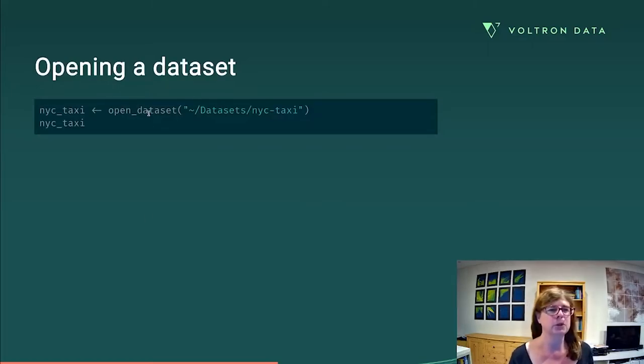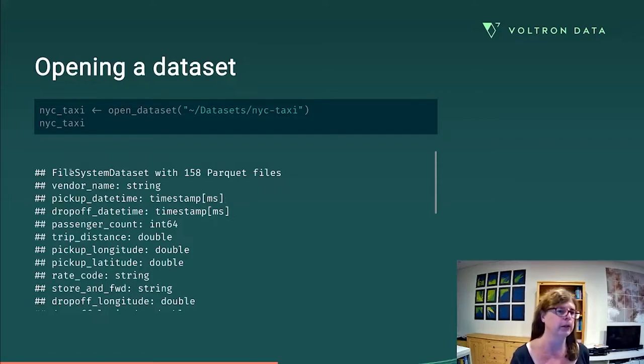We then go to open it and we're going to use the open data set function. And not surprisingly, this does not load all of that data into memory. What it does instead is scan those 158 files and construct a summary of it. And so the output here says we have a file system data set that's been constructed from these 158 files, but it does list off a bunch of metadata. Like it tells you what are the names of the variables. So here's the pickup date time. That's a timestamp variable, the number of passengers, that's an integer, how far it was, that's a double and so on.